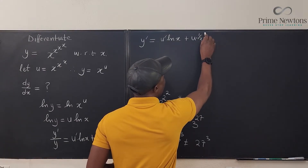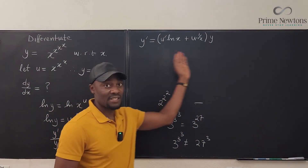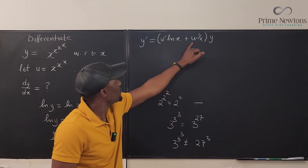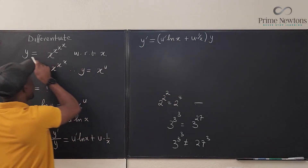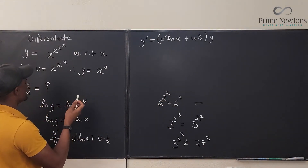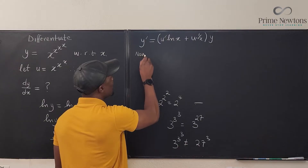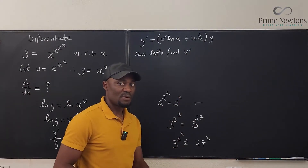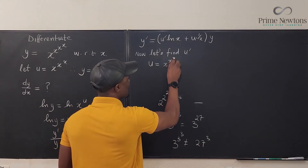So y' equals y times [u' ln x + u/x]. Everything is multiplied by y. The only thing we don't know in this answer is u'. We already know u — it is x to the x to the x — and we know y, which was the original expression. The only missing piece is u', so now let's find the derivative of u.